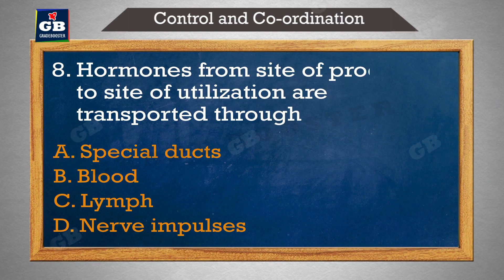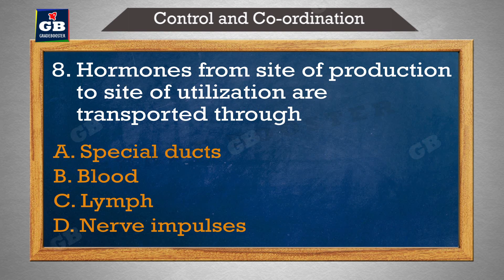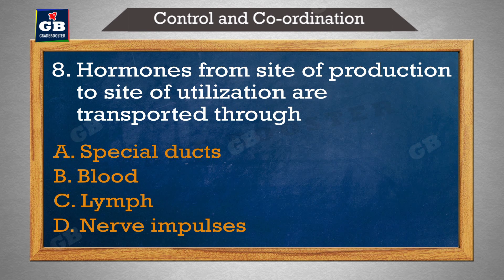Hormones from site of production to site of utilization are transported through — utpadan ki site se hormones upyog karne ke liye site ke madhyam se le jaya jata hai: a) special ducts, b) blood, c) lymph, d) nerve impulses.